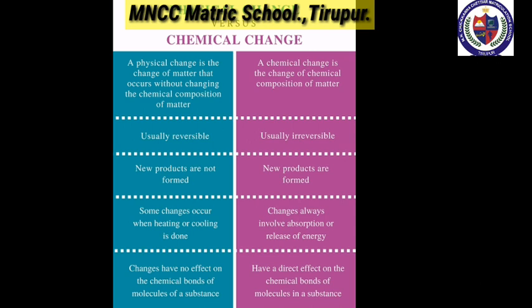There is no change in the chemical composition of water. A chemical change is a change in the chemical composition of matter. Physical changes are usually reversible; chemical changes are usually irreversible. In physical changes, new products are not formed; in chemical changes, new products are formed.